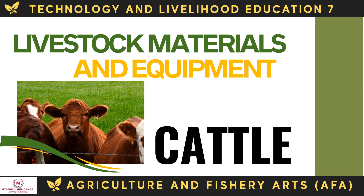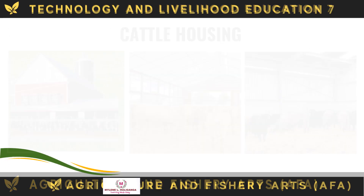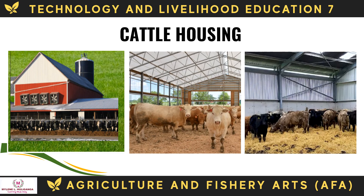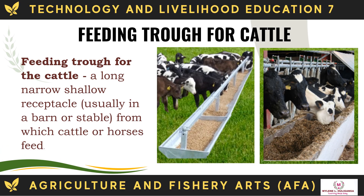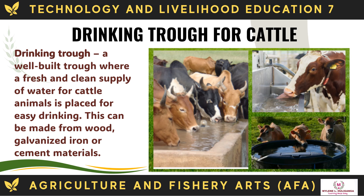The following are the materials and equipment used for cattle. Cattle housing is the living space or house for cattle. It must provide a comfortable, clean, well-drained, and dry lying area with shelter from adverse weather, space for the animal to move, lie down, and rise freely, as well as access to adequate food and water. The feeding trough for cattle is a long, narrow, shallow receptacle usually in a barn or stable from which cattle or horses feed. The drinking trough is a well-built trough where a fresh and clean supply of water is placed for easy drinking, and can be made from wood, galvanized iron, or cement.